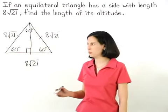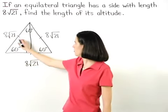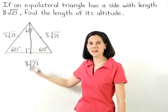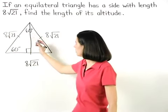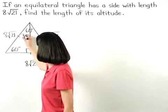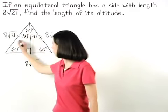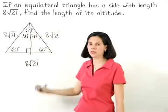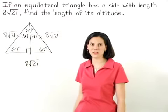Notice that the altitude creates two congruent triangles by hypotenuse leg. Therefore, the 60 degree angle at the top is split into two 30 degree angles, which means that our equilateral triangle is split into two 30, 60, 90 degree triangles.